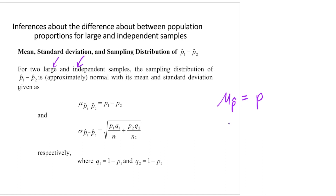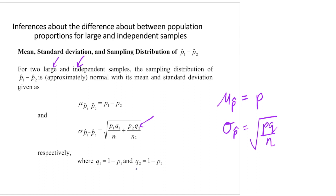If you still recall, the standard deviation of the sample proportion is the square root of pq over n, and this is simply an extension of that formula. Do you still recall what q is? If p is the proportion of success, then q would be the proportion of failure. So for example, q1 will be 1 minus p1, and q2 will be 1 minus p2.